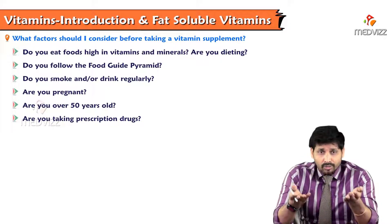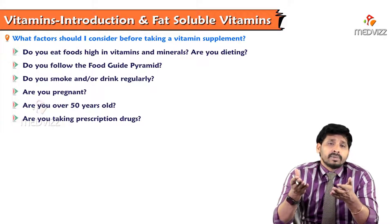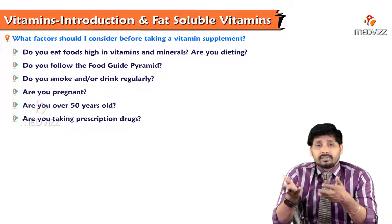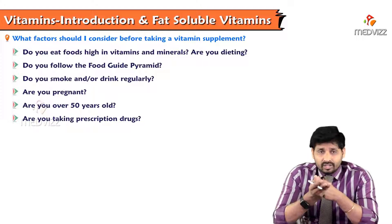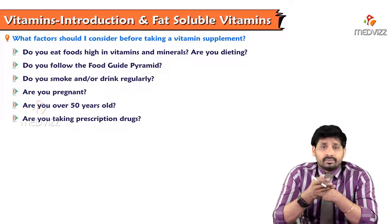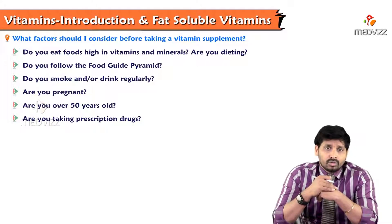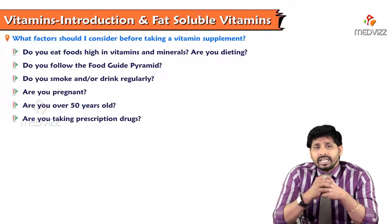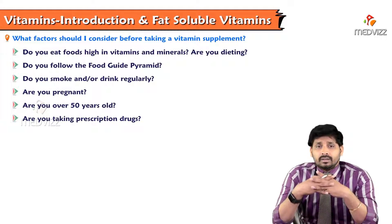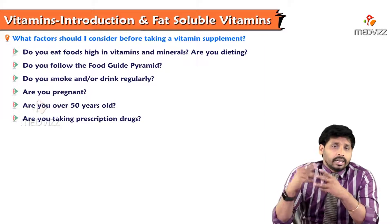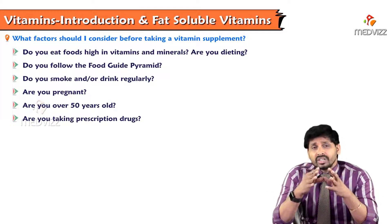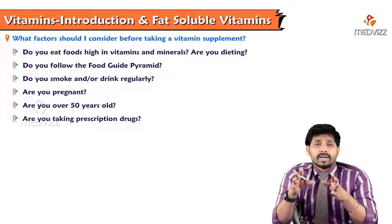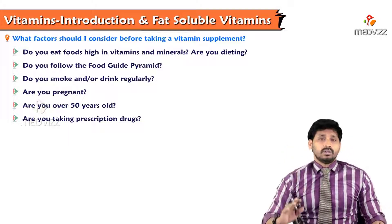During pregnancy, more energy is needed for the baby, so energy-releasing vitamins are important along with folic acid and B12, which are water soluble vitamins that promote cell synthesis. For aged individuals, B6 (pyridoxine) is important to keep them active. If taking antibiotics, some vitamins synthesized by gut bacteria — like vitamin K and B2 — may be inhibited, requiring supplementation.